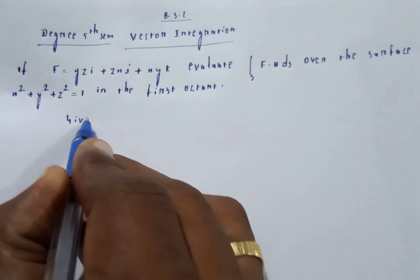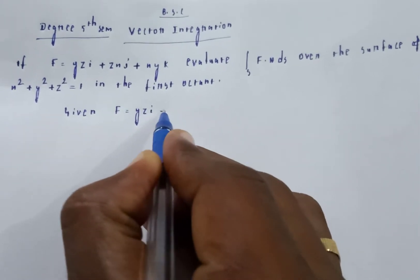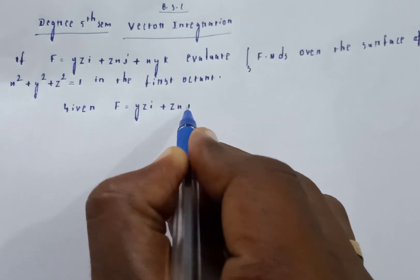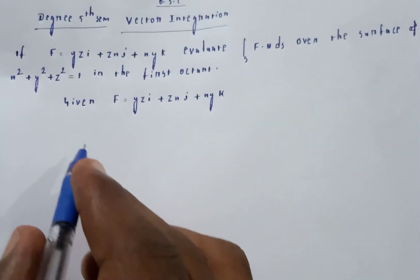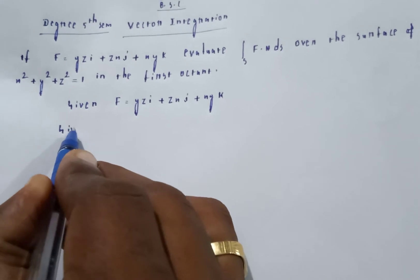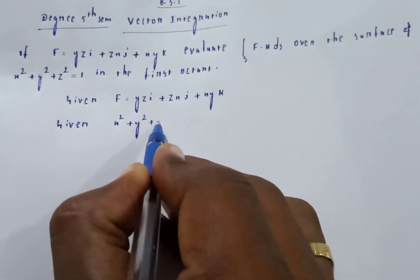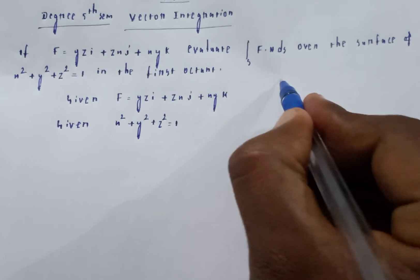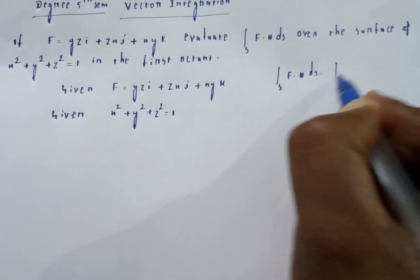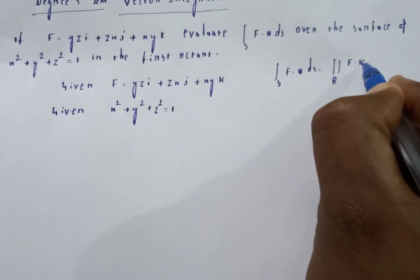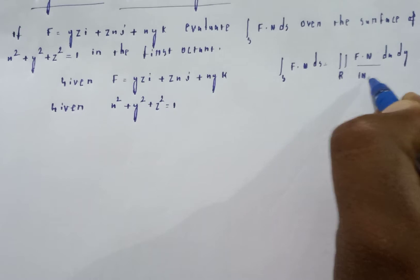Problem given: f is equal to yzi plus zxj plus xyk. The surface is x square plus y square plus z square equal to 1. The integral is the double integral over surface S of f dot n ds, which equals double integral over R of f dot n divided by mod of n dot k, dx dy.